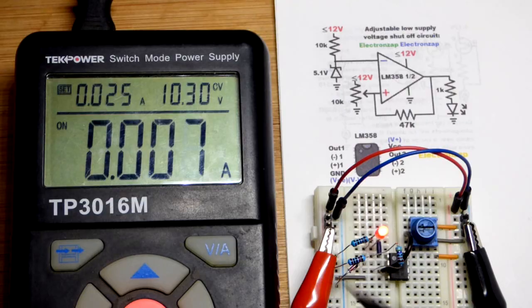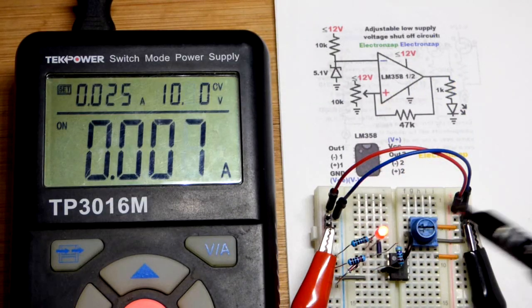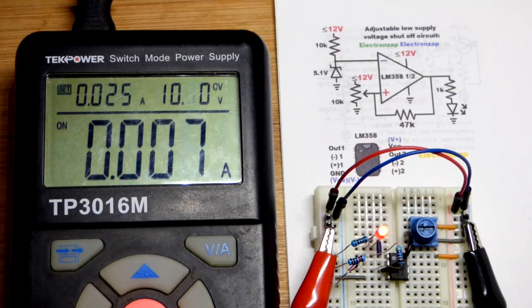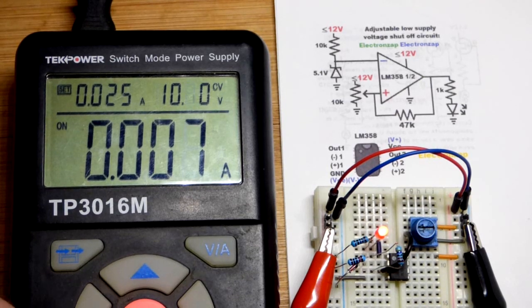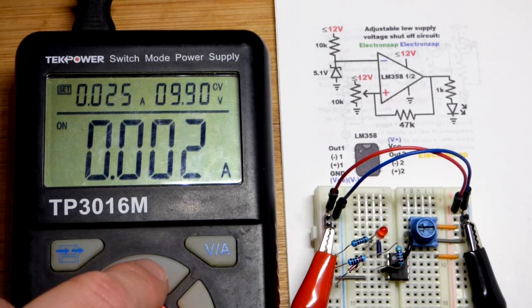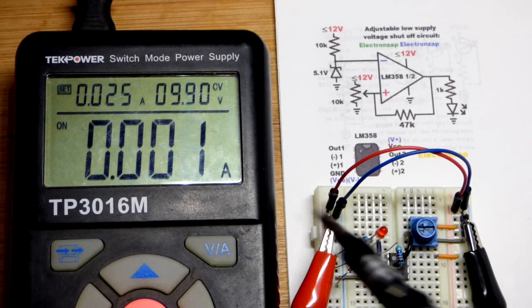Especially when you're using battery power, you want to have it so it charges a bit before the load will turn on. That's pretty common. But yeah, this is a pretty simple way you can make a low voltage cutoff circuit.